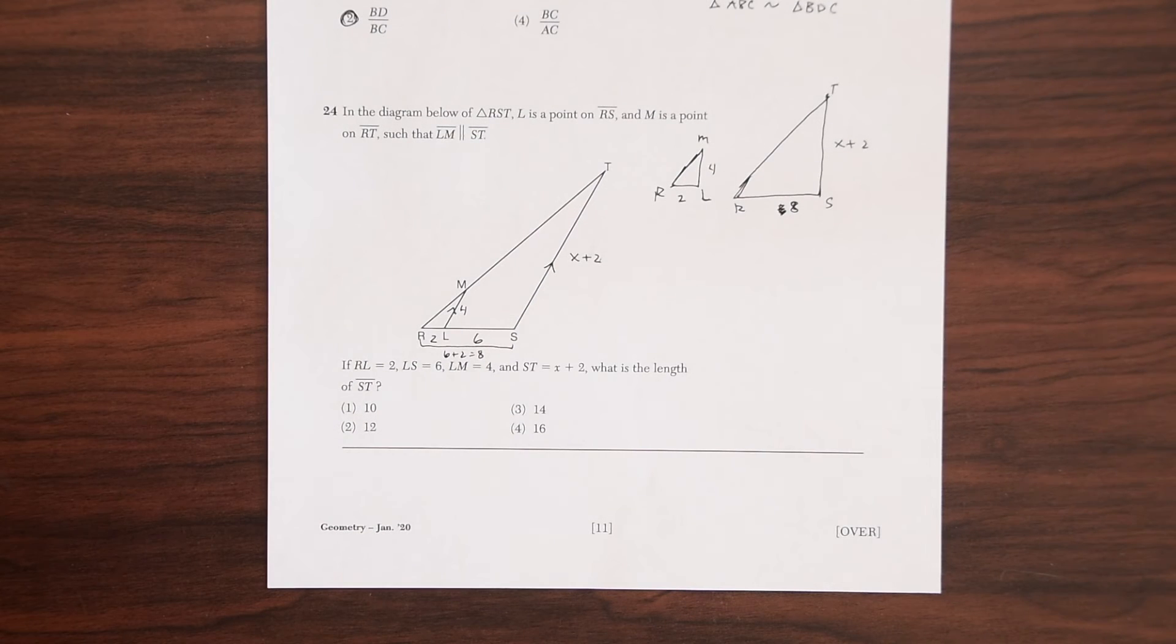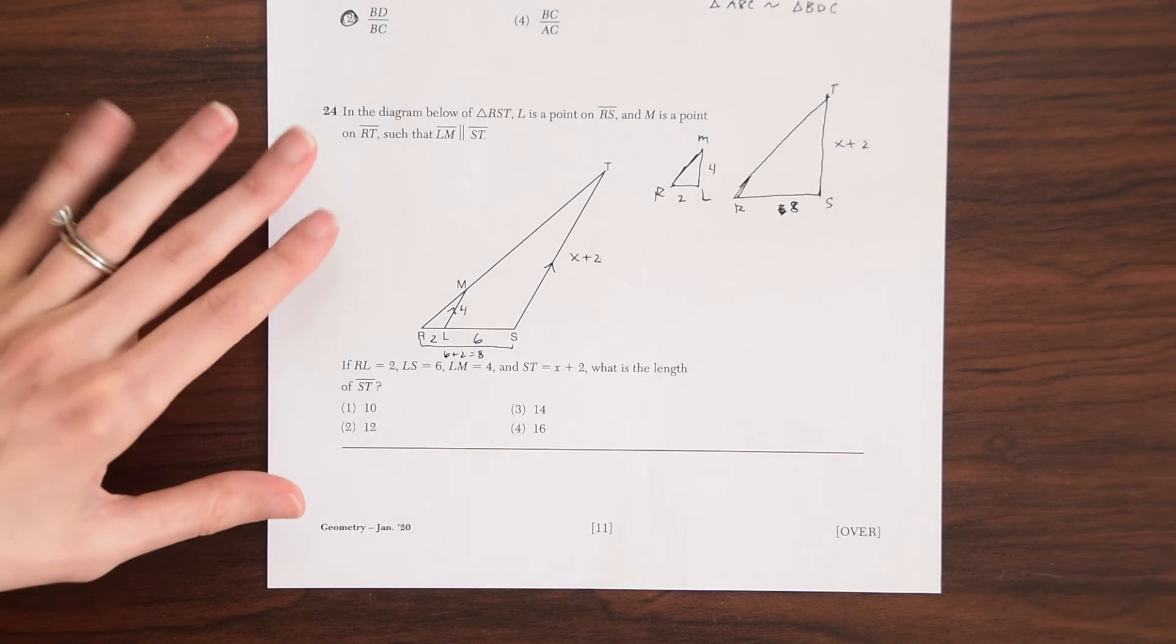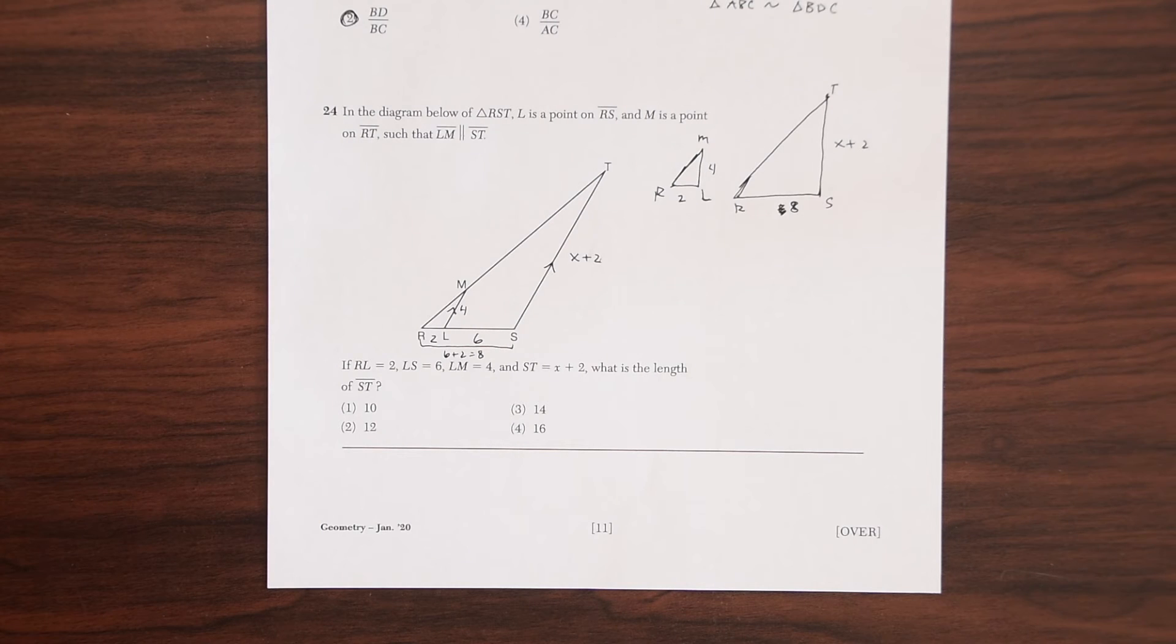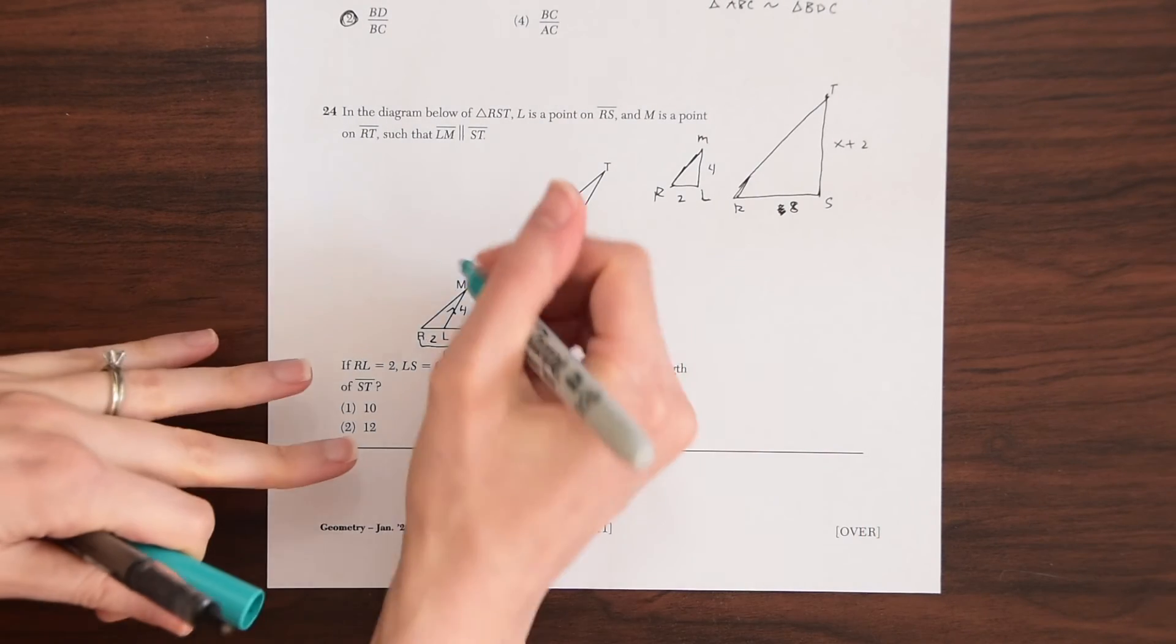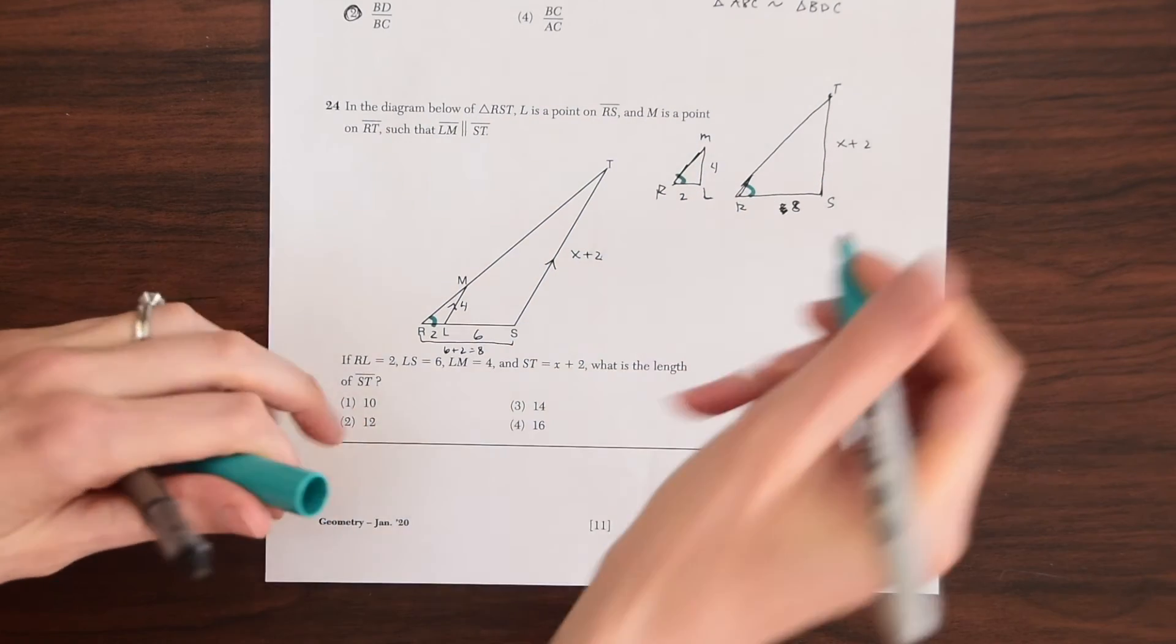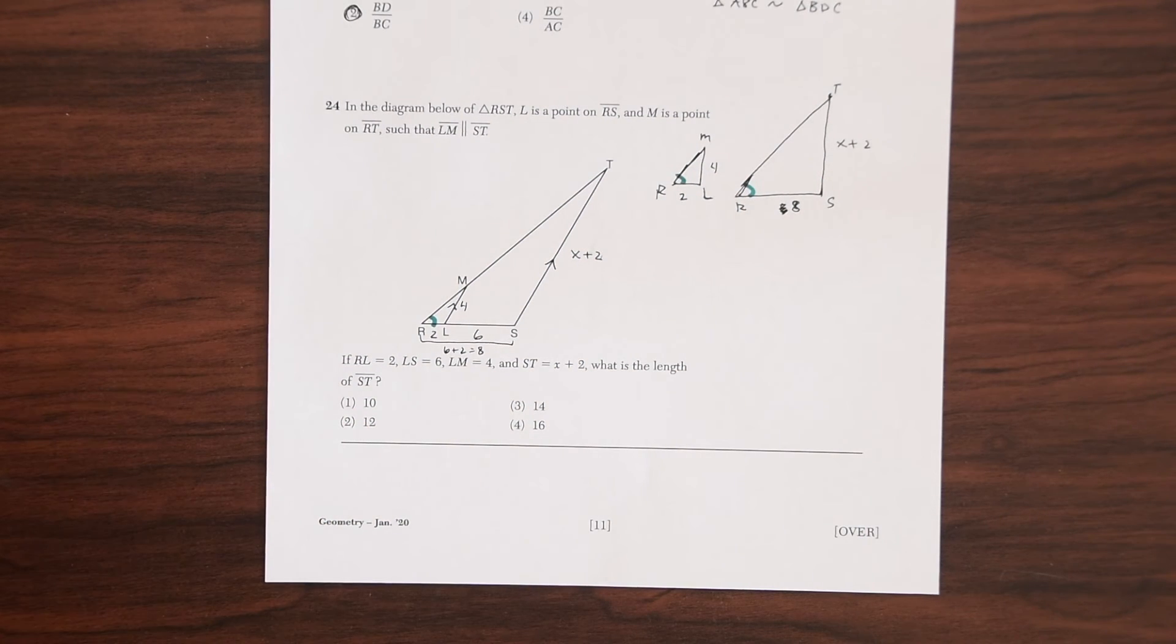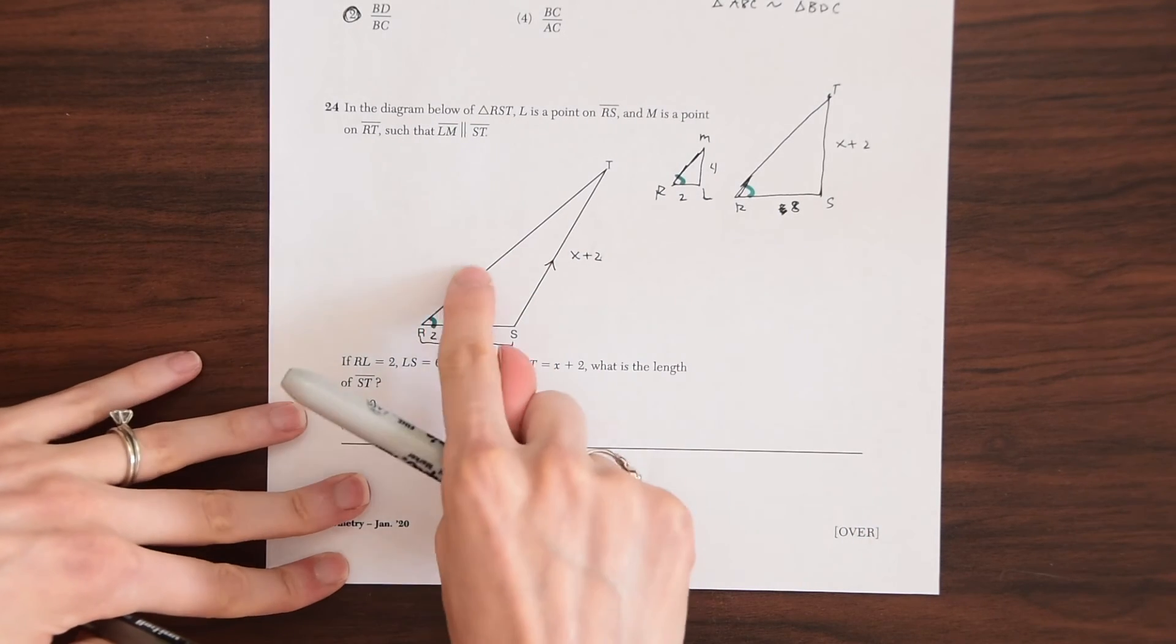So how do I know these are similar to each other? Again, they share angles with each other. So first we know that they share this angle R here, right?